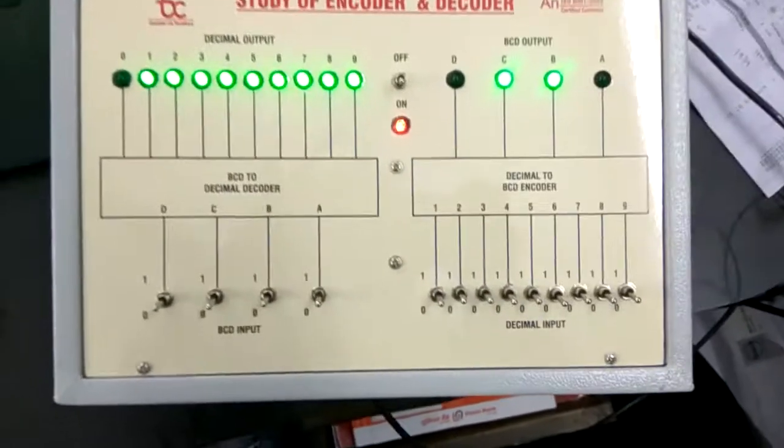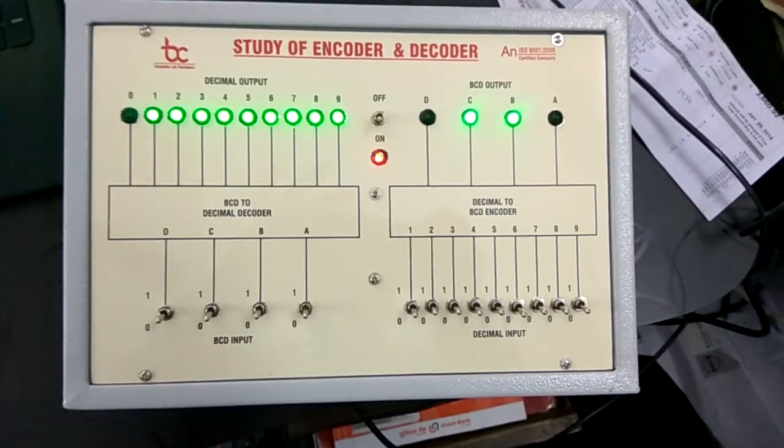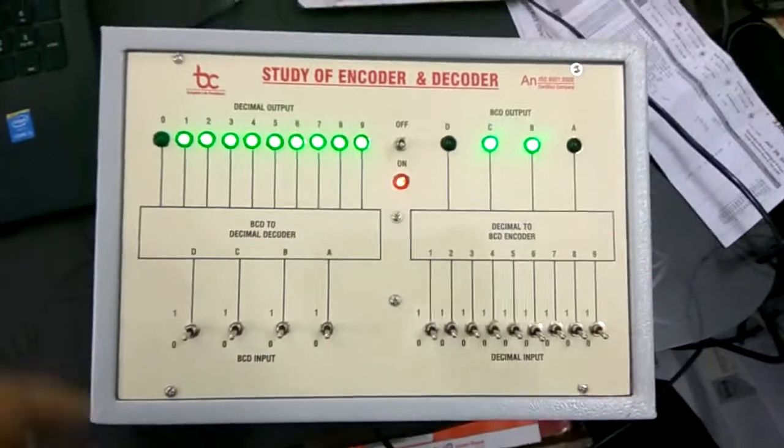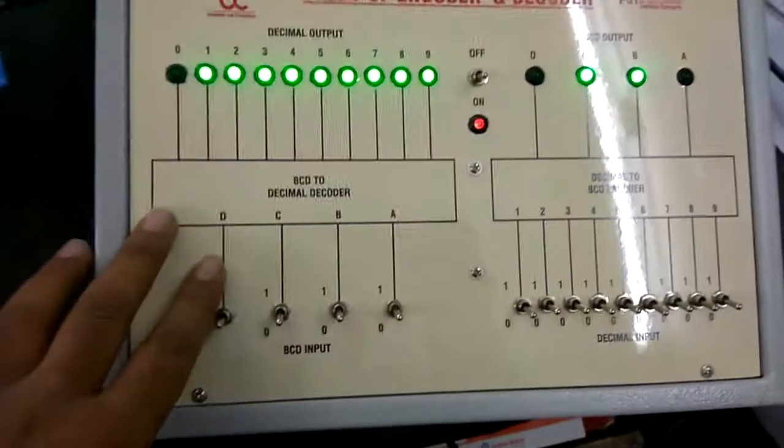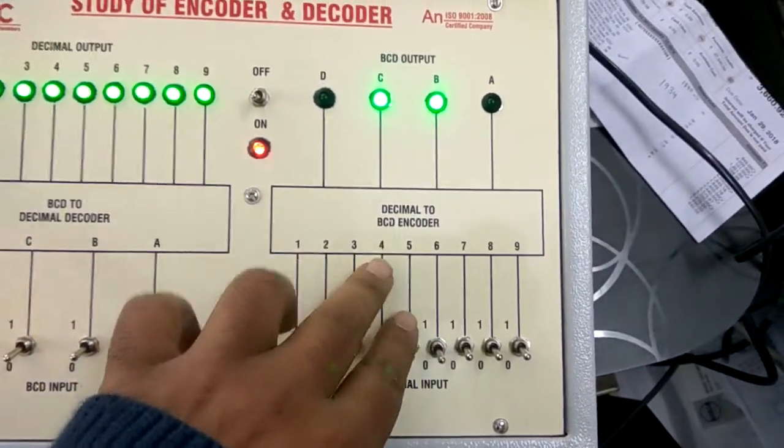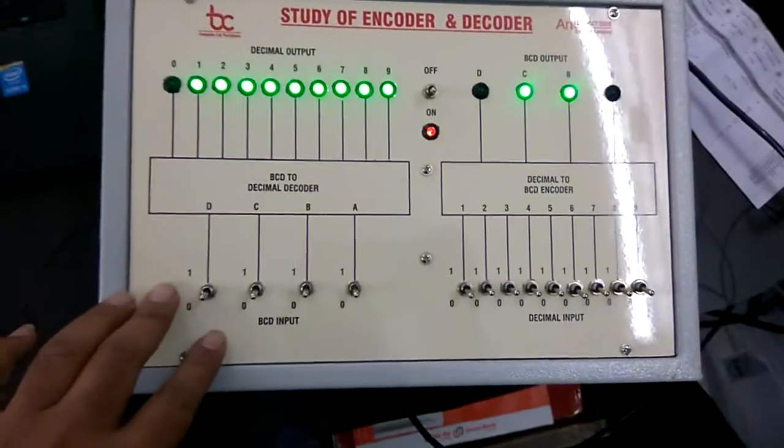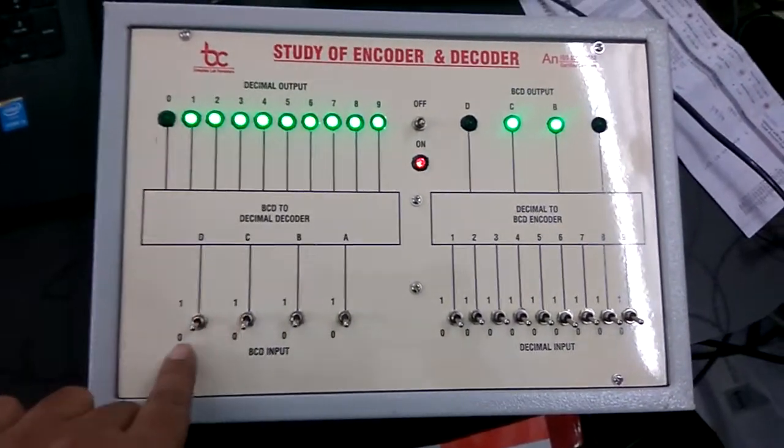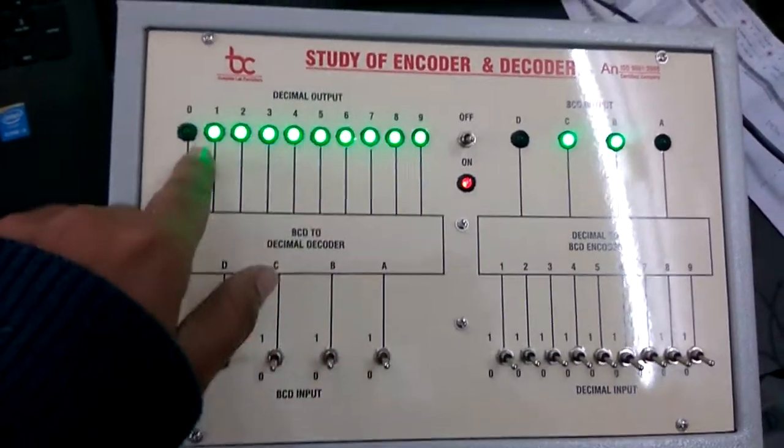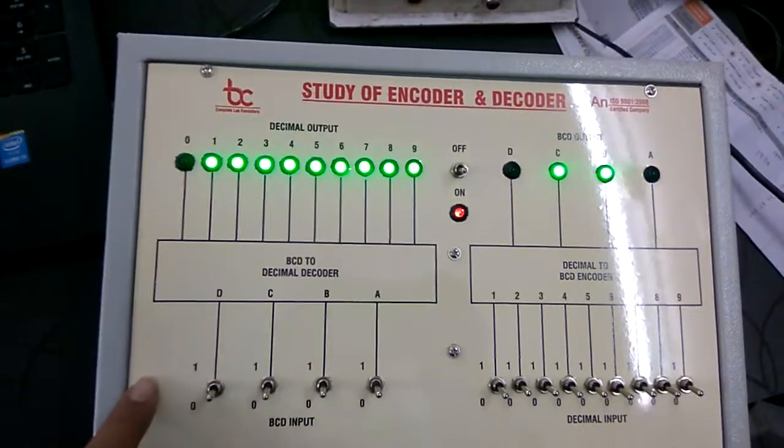BCD to decimal decoder and decimal to BCD encoder kit by BTC Instruments Ambala. This section is for BCD to decimal decoder and this section is decimal to BCD encoder. This has four input switches, zero and one configuration, and these are the LEDs for output.